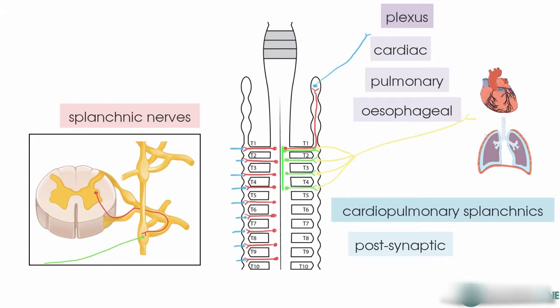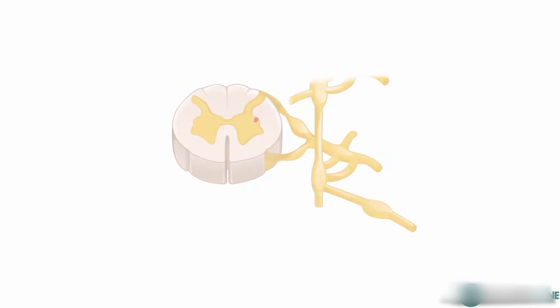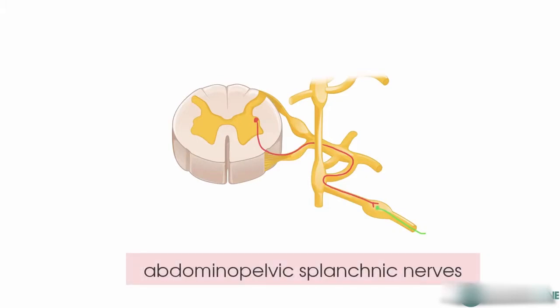Now we will take a look at the case where the pre-ganglionic fibre doesn't synapse in the sympathetic trunk at all. Instead it passes straight through it and forms a synapse in a peripheral ganglion. Again, these autonomic neurons are not travelling in spinal nerves, so they are known as splanchnic nerves. These splanchnic nerves supply the abdominal and pelvic viscera and are known as abdominopelvic splanchnic nerves.